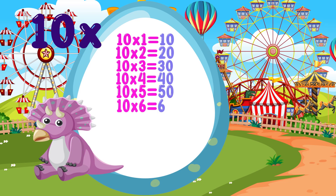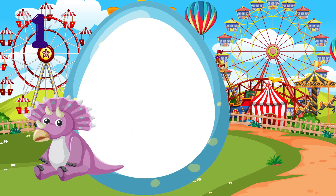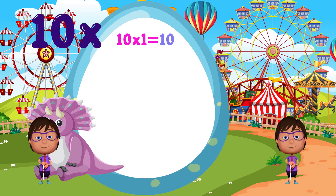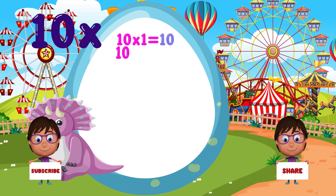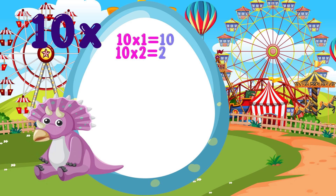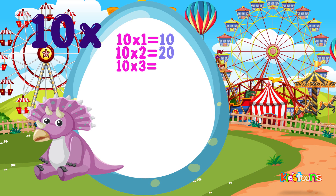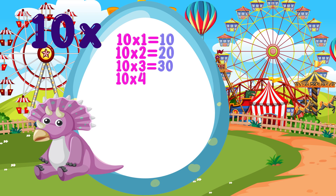So let's repeat it again. 10 times 1 is equal to 10. 10 times 2 is equal to 20. 10 times 3 is equal to 30. 10 times 4 is equal to 40. 10 times 5 is equal to 50.